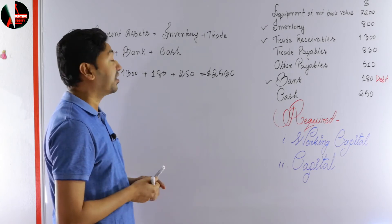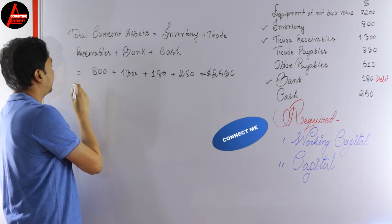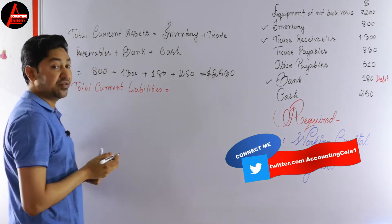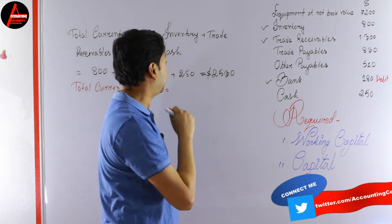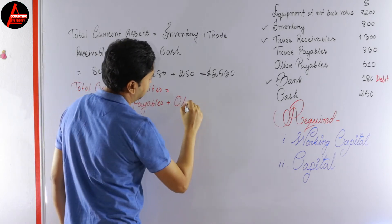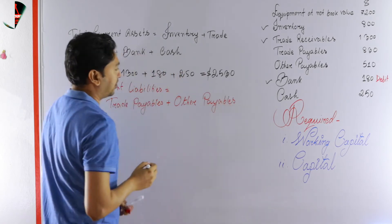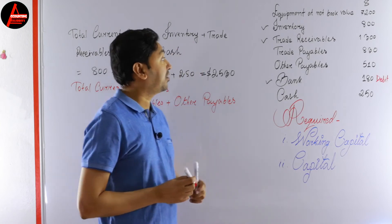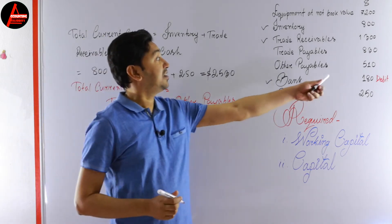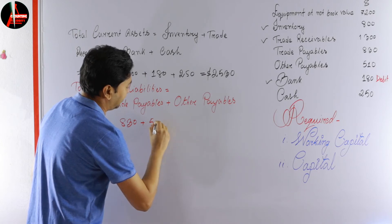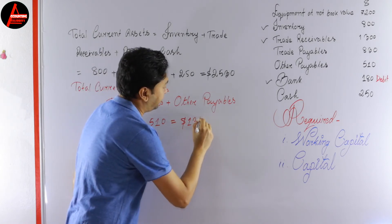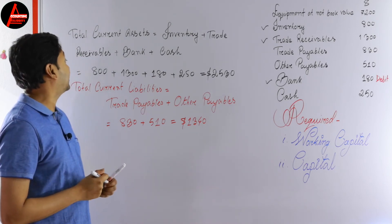Now we calculate total current liabilities. We have two items: number one is trade payables, and number two is other payables. Trade payables plus other payables — other payables are $510. Adding these two values together gives us total current liabilities of $1,340.